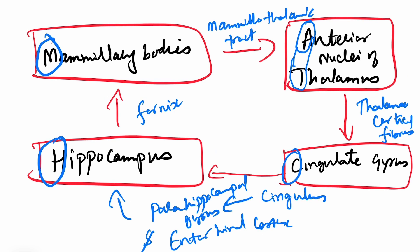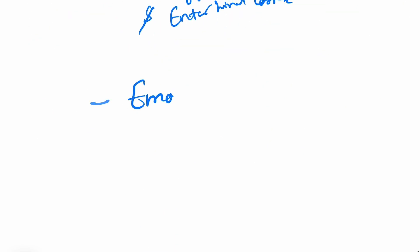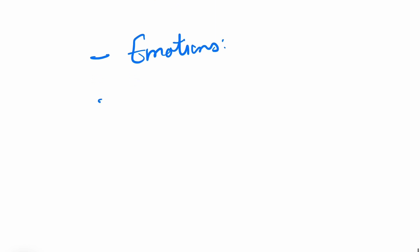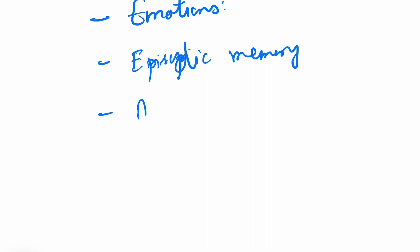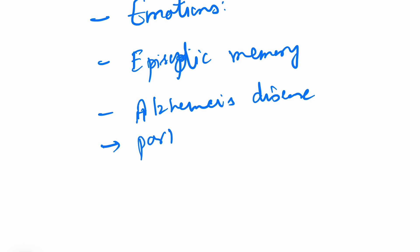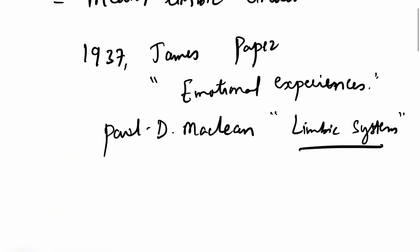Remember the mnemonic MATCH for the Papez circuit. Papez circuit was earlier thought to be concerned with emotions, but later it was found that the amygdala is the actual site for emotion. The other functions of this circuit include involvement in episodic memory. It is also involved in various diseases like Alzheimer's disease, Parkinson's disease, and senile dementia, because in these diseases the neurons of this circuit are affected.